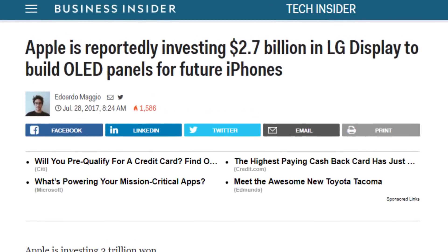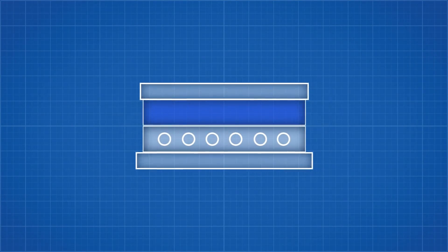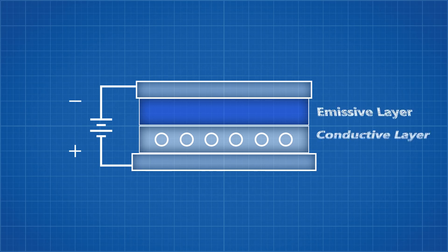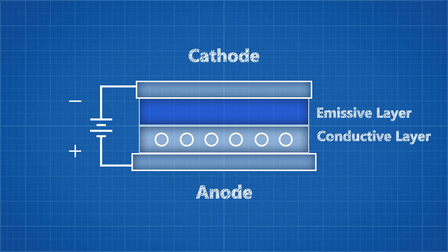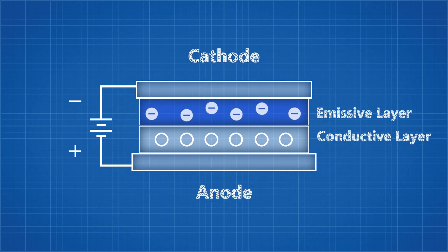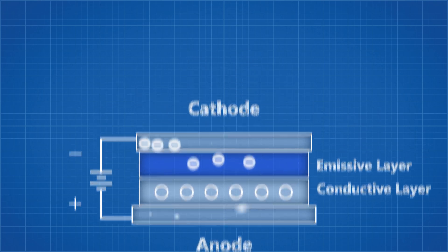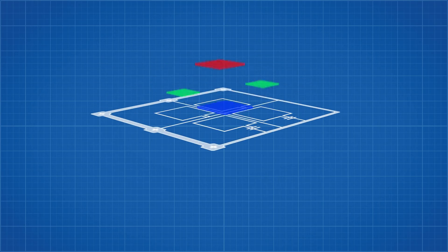OLED works very differently from LCD in a few key ways. For starters there's no backlight — instead each pixel is self-illuminating through the light emitting process called electrophosphorescence. There are two organic compounds called the emissive and conductive layers that are sandwiched between an anode and a cathode. As an electrical current flows from the cathode to the anode, electrons are given to the emissive layer and removed from the conductive layer. The electrons in the emissive layer then migrate to fill the holes in the conductive layer, and when they do, extra energy is released as a photon. This entire process is controlled by the TFT matrix, and the entire structure is placed on a substrate of either glass or polymer. Since there is no backlight and each individual pixel is individually controlled, substantial power saving can occur when displaying dark or black images.